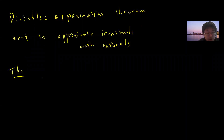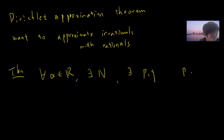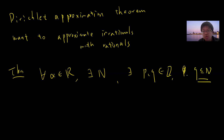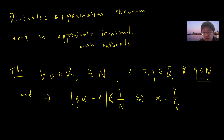So the setup is: you take any real number alpha and a positive integer n. Suppose you can only use the denominator up to n to form rational numbers, and you want to ask how well you can approximate alpha. So there exist integers p and q where q is less than or equal to n — so the denominator is bounded — and such that |q·alpha − p| is less than 1/n.